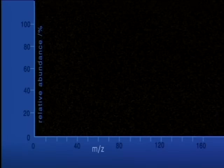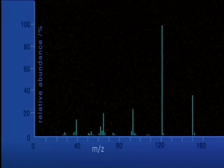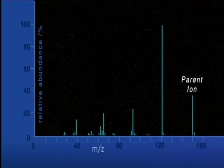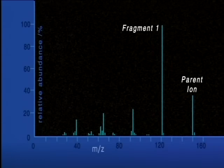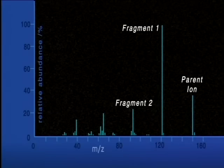As the ions are formed from molecules of the sample, they may fall apart or fragment. The ion of largest mass is often the parent or molecular ion, an ionized molecule that is not fragmented. Other peaks of smaller mass may represent charged fragments of this ion. The masses of these fragments may give clues as to the structure of the original molecule.